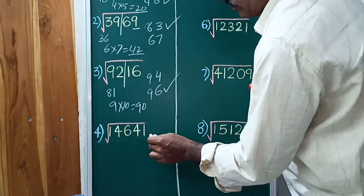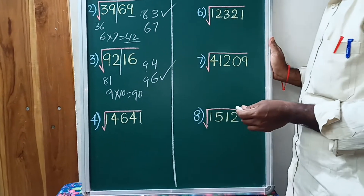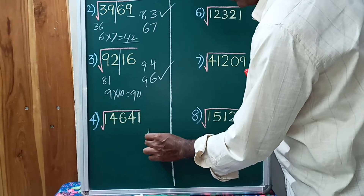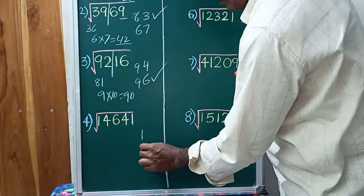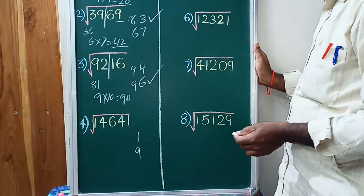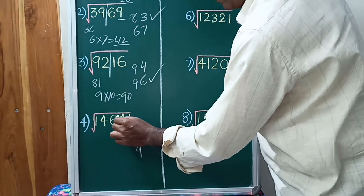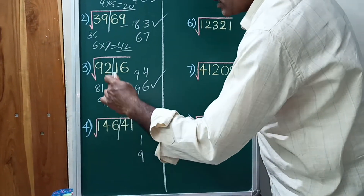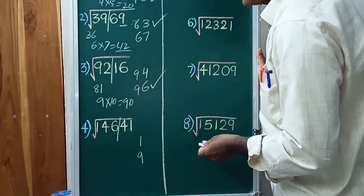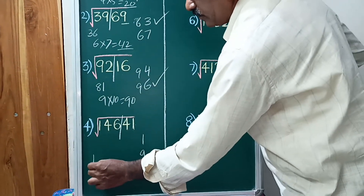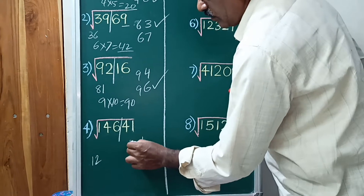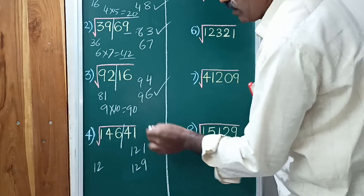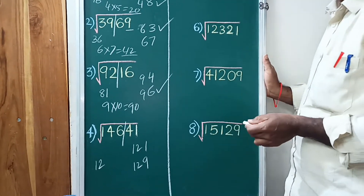Next: the last digit is 1. The square root complement of 1 is 9, giving candidates 1 and 9. We have 1 and 2 — here 3 digits. The value before the slash is 146, and the nearest square number is 144, giving 12. The square root of 14641 equals 121 or 129.